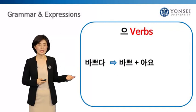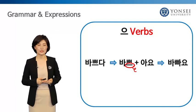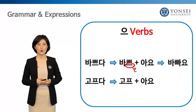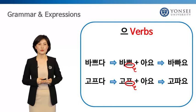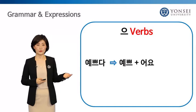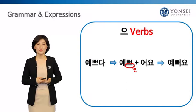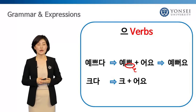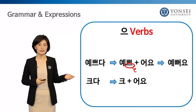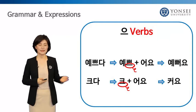Let's look at what happens when 으 verbs take 아요. In 바쁘다, the 으 in 바쁘 drops and the vowel before 으, which is 아, takes 아요 — so we get 바빠요. Likewise, in 고프다, 으 drops and the vowel 오 before 으 is combined with 아요. When the vowel before 으 is something other than 아 or 오, use 어요. For example, in 예쁘다, 으 is dropped and 어요 is added to form 예뻐요. For 크다, 으 in the verb stem 크 is dropped and 어요 is added — 커요.